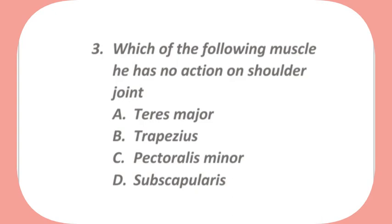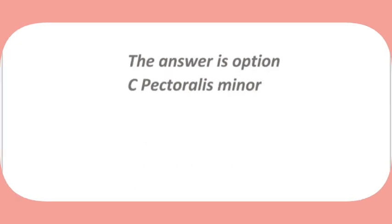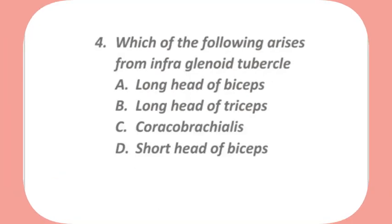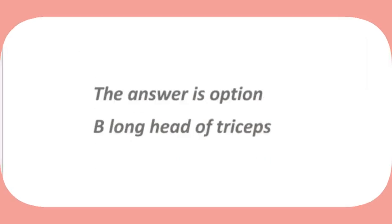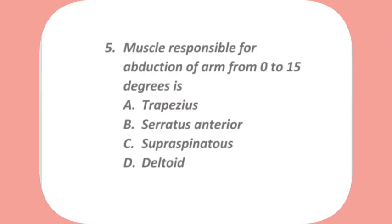Which of the following muscle has no action on the shoulder joint: teres major, trapezius, pectoralis minor, or subscapularis? The answer is option C — pectoralis minor. Which of the following arises from the infraglenoid tubercle: long head of biceps, long head of triceps, coracobrachialis, or short head of biceps? The answer is option B — long head of triceps.